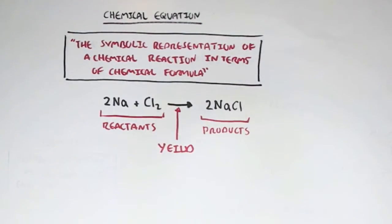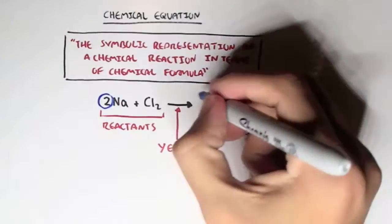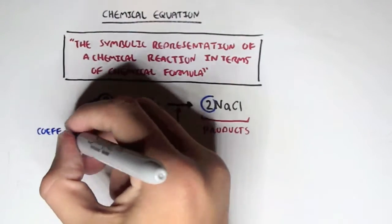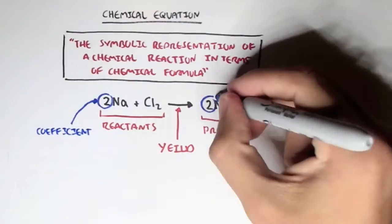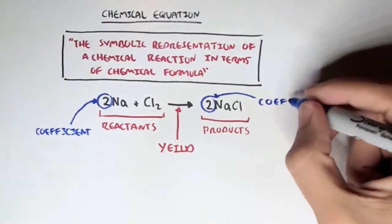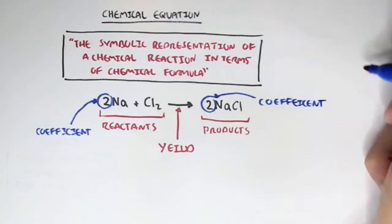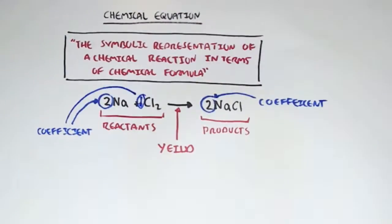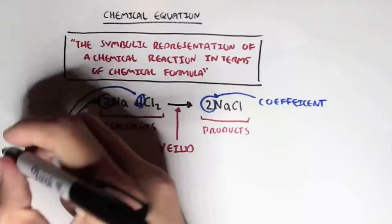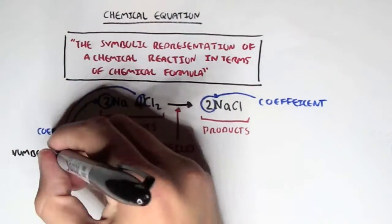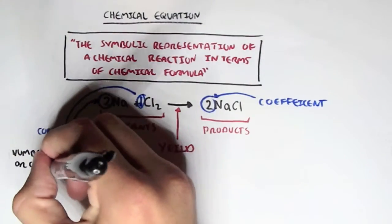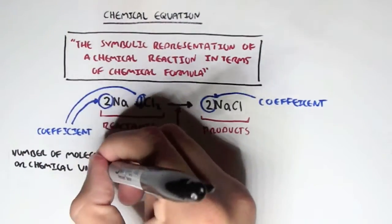These numbers in front of each element are known as the coefficients. Chloride gas also has one coefficient. This coefficient tells us the number of molecules that element has, or a chemical unit.